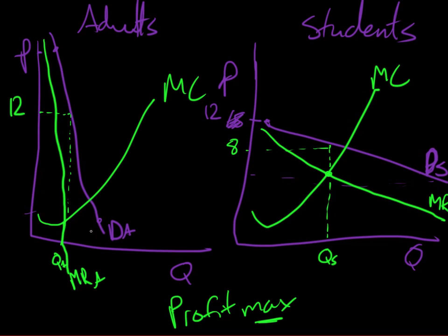Here we can notice that the adult is much less responsive to a change in price. He would be what we would categorize as inelastic, and because of that he's going to pay a higher price. Whereas here we're dealing more with elastic demand. They're much more responsive, so we don't want to charge a higher price to these people or else we'll lose all of the customers.